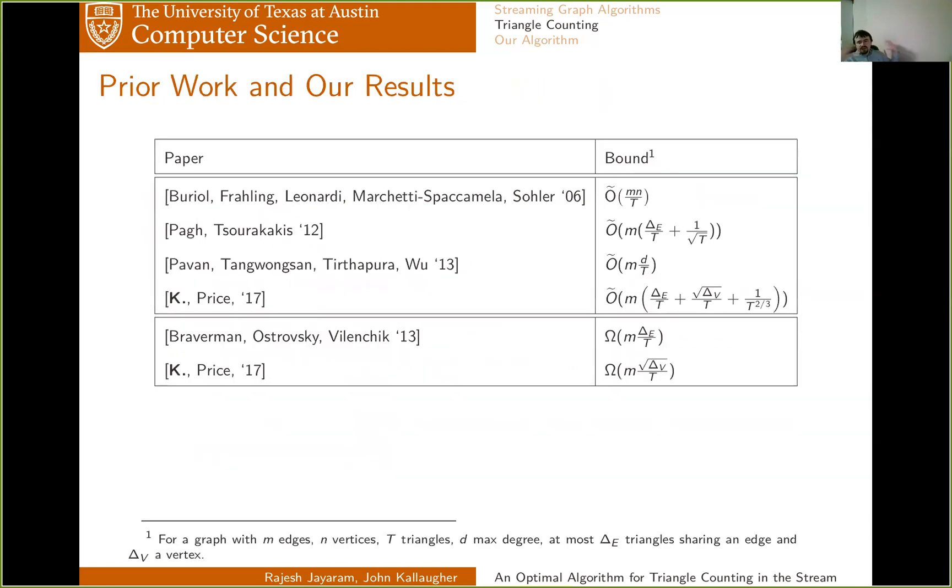So then, with these extra parameters, there's an algorithm that's known that gets M times delta E over T plus square root delta V over T plus one over T to the two-thirds, so almost takes these lower bounds, except that it has this additional one over T to the two-thirds term. As I wanted to point out here, another series of work using a different parameterization, where instead you look at the max degree of the graph, D, and there that's M D over T is the best you can get.